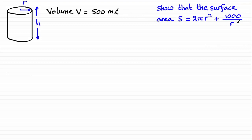So let's start by finding that surface area. S is going to be equal to the area of the two ends — there are two circles. The area of a circle is πr², and we've got two of them, so we've got two lots of πr².